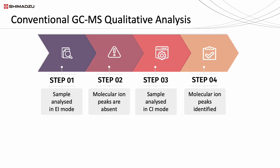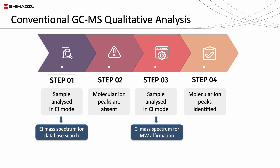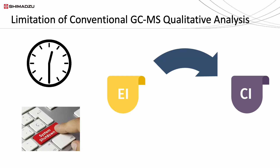Clearly, both EI and CI analysis are needed for conventional GCMS qualitative screening of compounds. The EI spectrum can be submitted for database search, while the CI spectrum provides molecular weight information. Both EI and CI spectra are complementary to each other for more affirmative compound identification. However, a lot of time is wasted when switching between an EI ion source and a CI ion source, which makes the whole process a hassle.